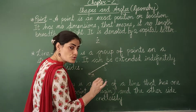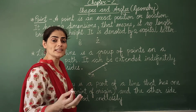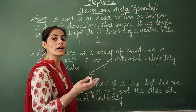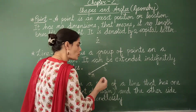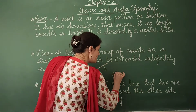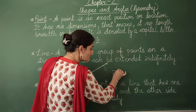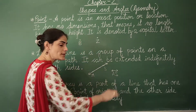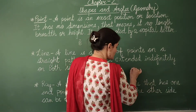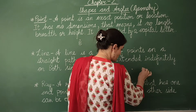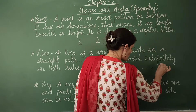Now, how do we represent a line? It becomes quite tedious to write the word 'line AS' again and again, so we represent it with the help of a symbol. I write these two points together and over that I draw the symbol of a line. Suppose I take one more example with four points — let's join them.